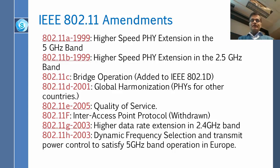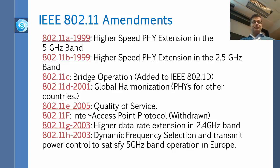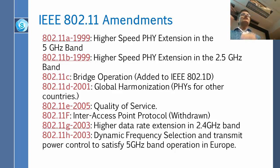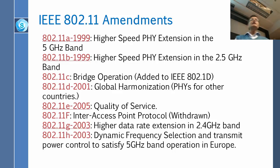B was done in 1999 at the same time, but it stayed in 2.4 gigahertz, so everybody loved B. Then C was done for bridge operation. D was the global harmonization — basically, files for other countries.